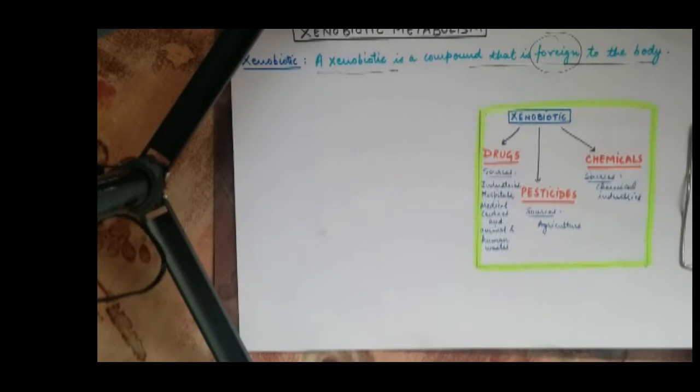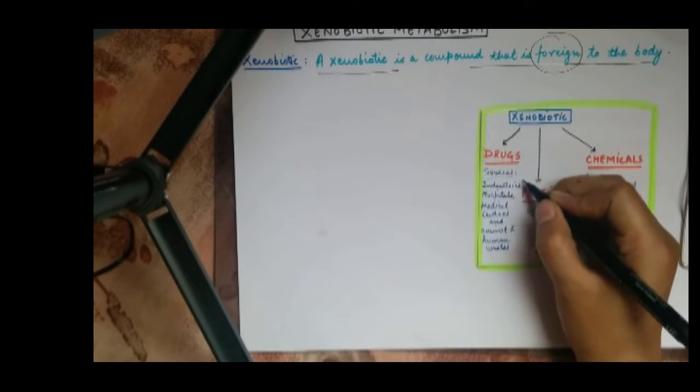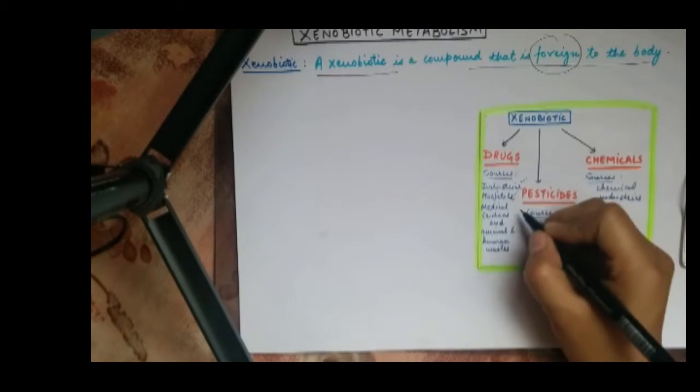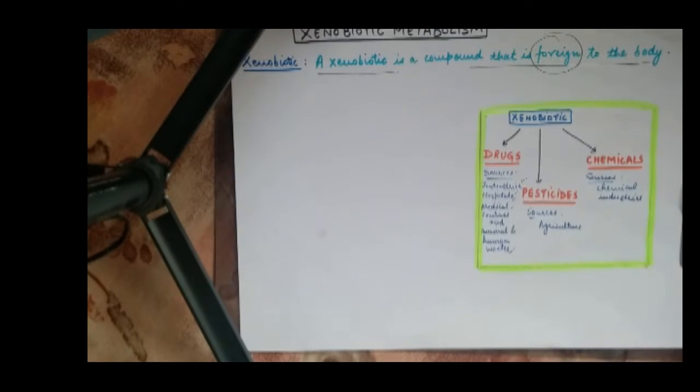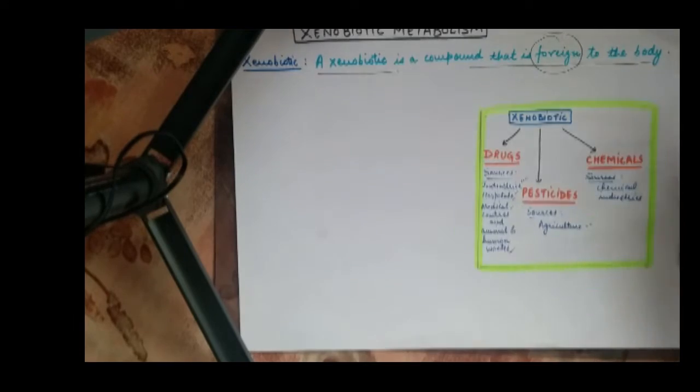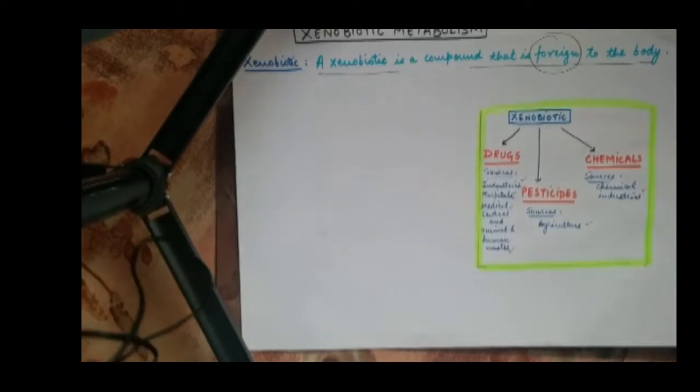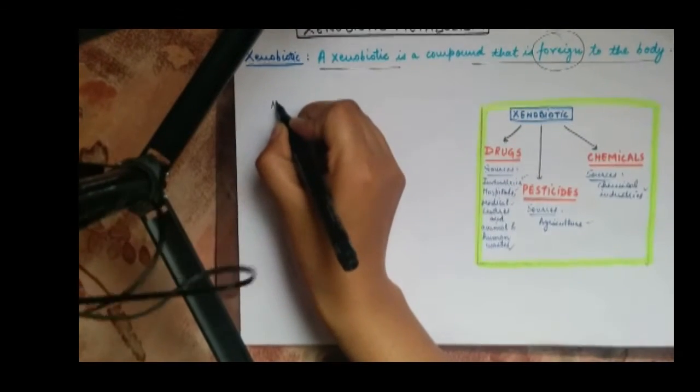Now a xenobiotic could be anything foreign, such as drugs, which includes pharmaceutical industrial waste, hospitals, medical centers, and animal and human waste. Pesticides may include agricultural waste, and chemicals may include chemical industries. Now let's see something about its metabolism.